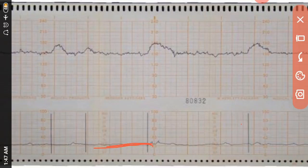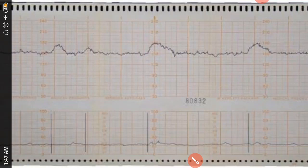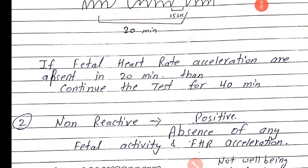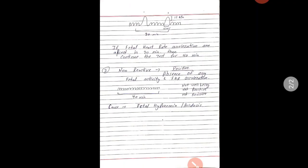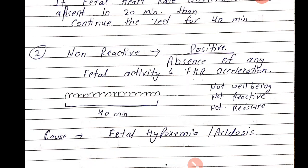This shows fetal movements with fetal heart rate tracing — this is a reactive and normal NST. The lower tracing shows fetal movements and the upper tracing shows fetal heart rate. It is called reactive because fetal heart rate acceleration is visible, normal because fetal well-being is confirmed, and negative because there is no abnormality detected in the fetus.